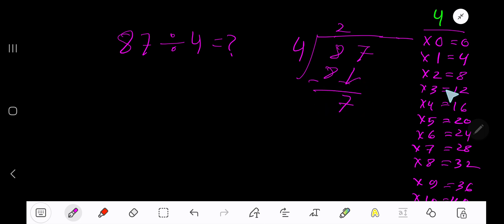4 goes into 7 how many times? 2 times 8, which is greater than 7, so 1 time. 1 times 4 is 4. Subtract, 3. So our answer is 21 remainder 3.